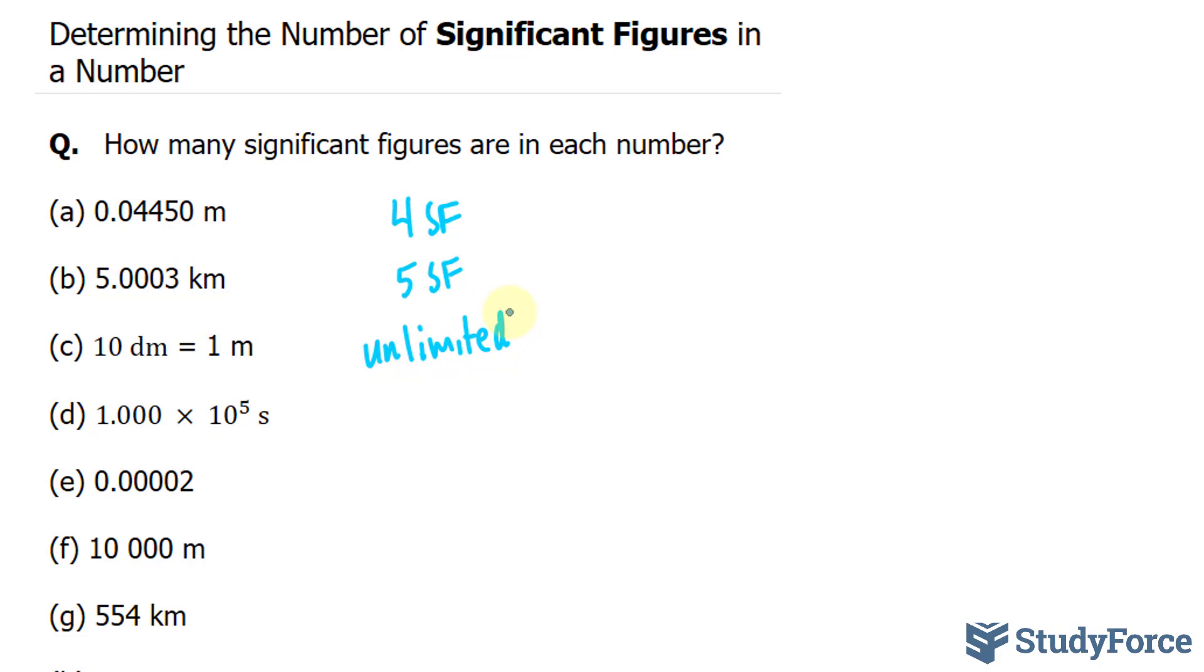In question D, we have 1.000 times 10 to the power of 5. This number is in scientific notation. And all four of these numbers are significant. We'll write down four significant figures.